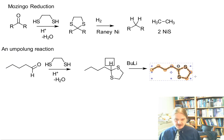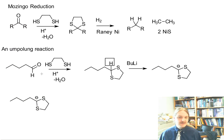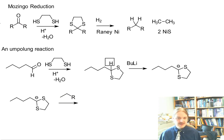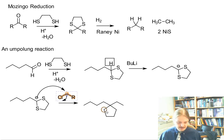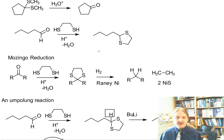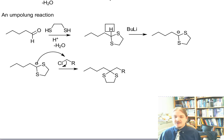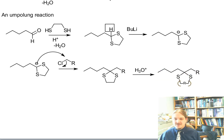These anions can be nucleophiles and react with other kinds of electrophiles. One interesting reaction is that they are capable of doing SN2 reactions, so you can alkylate at that position. This gives a kind of chain extension, and the thioacetal is still there. But if you then hydrolyze that thioacetal back to the carbonyl compound, you have taken an aldehyde and made it into a ketone with some extra carbons.